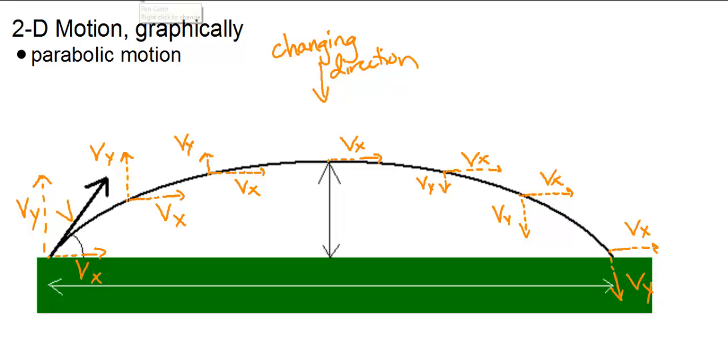We call the distance that goes horizontally the delta x. Sometimes that's referred to as the range. And then if we're talking about the peak height, this would be our delta y at the peak, to get to the peak height. That's how we look at it graphically.